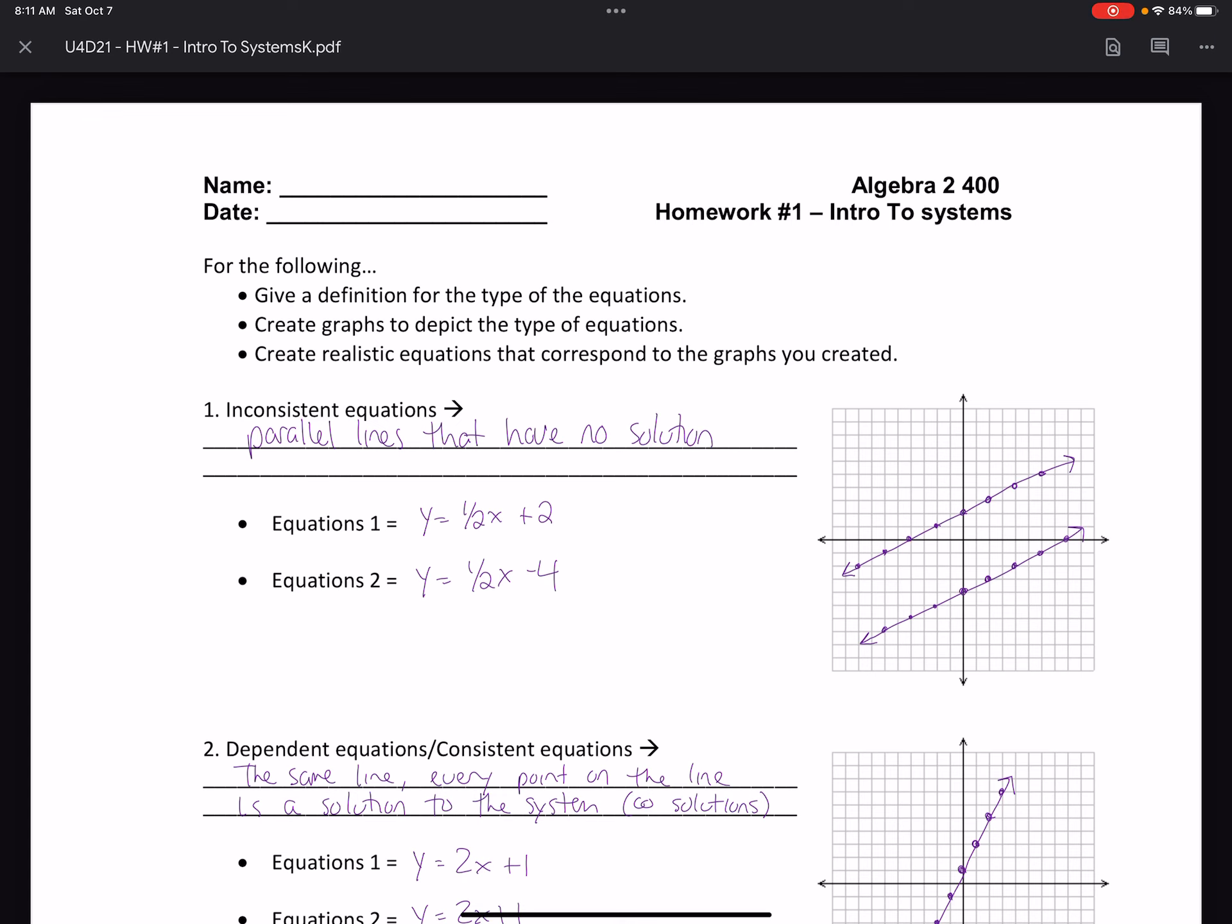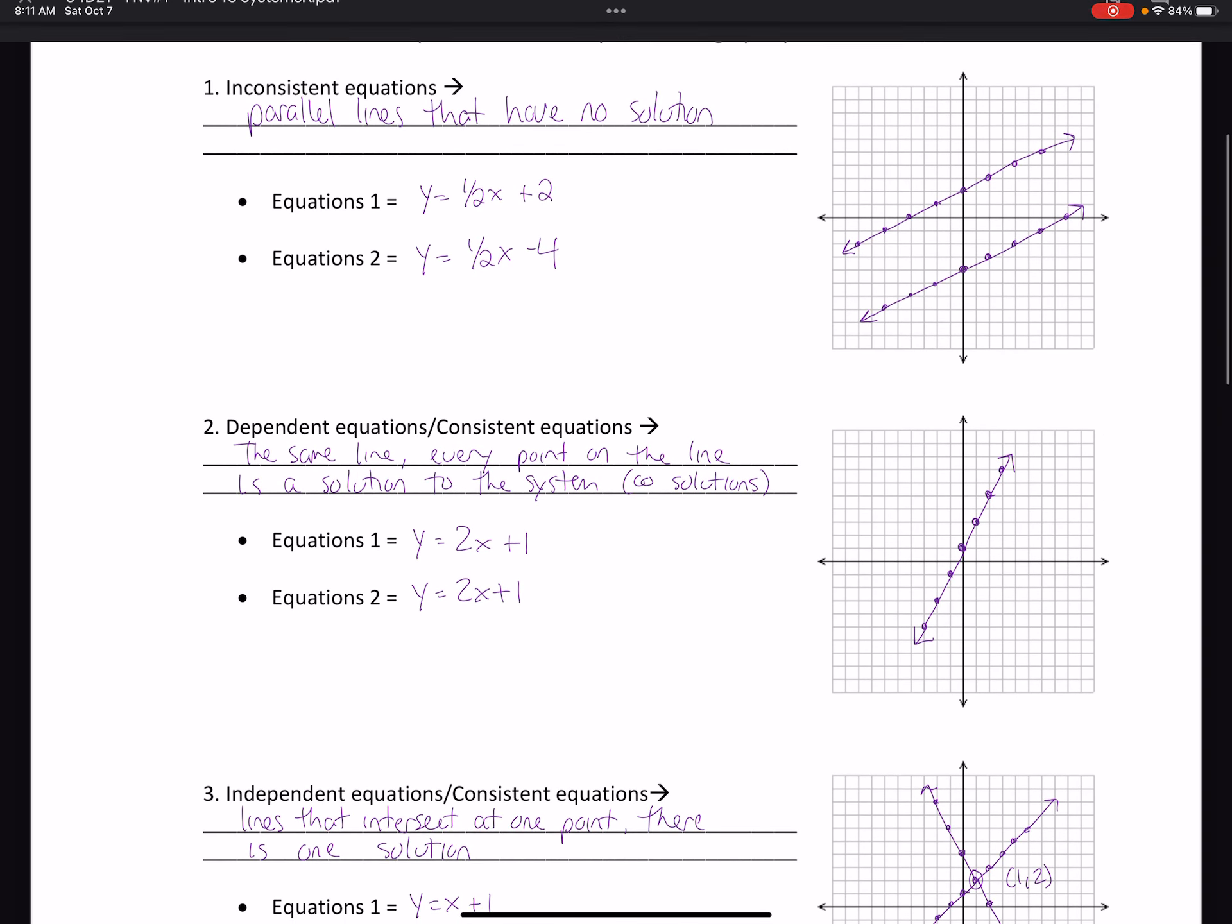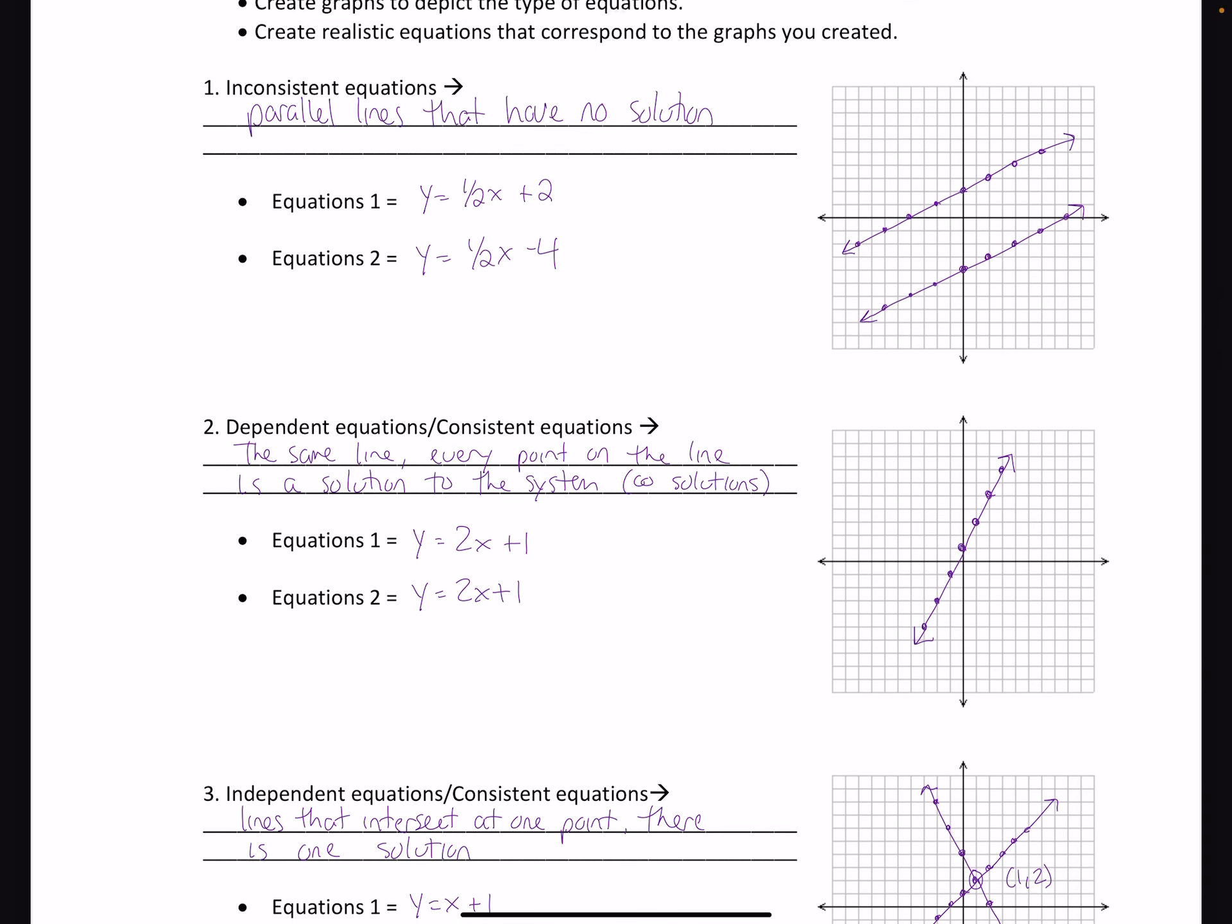Now the opposite of inconsistent would be a dependent consistent equation. A consistent dependent system of equations is when your system is the exact same line. So the fact that I graphed y equals 2x plus 1 and y equals 2x plus 1, the answer to that system is every point on that line.